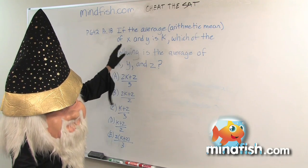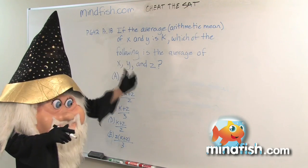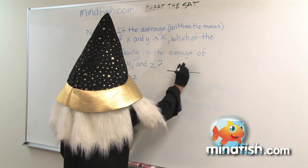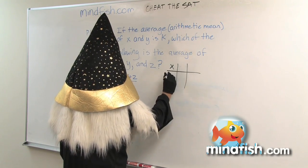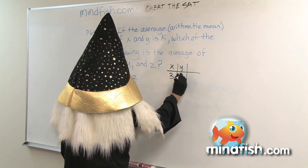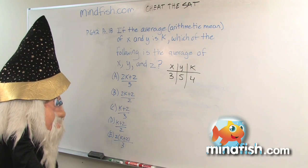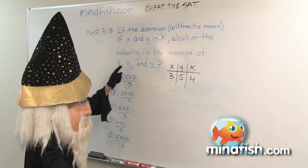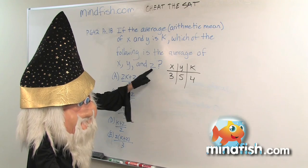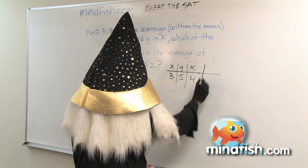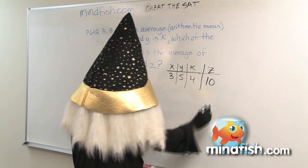So it says that the average of x and y is k. Rather than think about this in terms of variables, we're going to make up some nice easy numbers. So if the average of 3 and 5 is k, then k is 4. Now it says what is the average of x, y, and z? So in order to do this, I'm going to add a z in and I'm going to make my z 10.